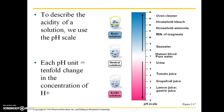Another way to think of this: if you look at these little beakers here, a basic solution is going to have a lot of hydroxyl groups — those OH groups — and very few hydrogen ions. A neutral solution is going to have an equal number of hydroxyl groups and hydrogen ions, and an acidic solution is going to have more hydrogen ions than hydroxyl groups.